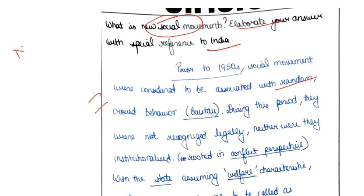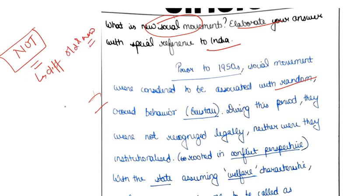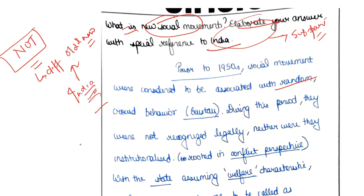Just by looking at the question, let's quickly go through what not to write in this answer. It's good if we don't write the difference between old and new social movement. The second part — 'elaborate your answer with special reference to India' — is not a sub-part; when you explain new social movement, you have to give special reference to India throughout. This question is of 20 marks.